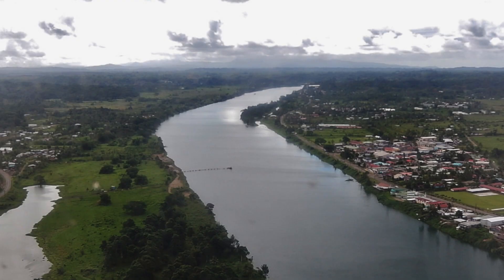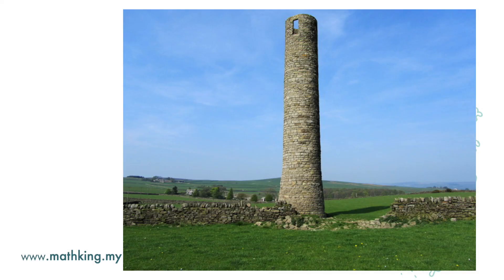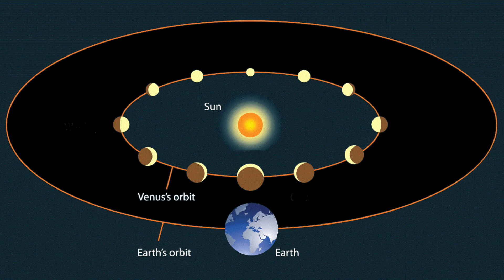There are many triangles that we can draw in the real world. For example, we can draw a right angle triangle and use the ratio of the sides to find the width of a river. We can draw another right angle triangle and use the ratio to find the height of a tower. This is the diagram of our solar system — we can even draw a triangle and use the ratio to find the distance from the earth to the sun.